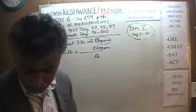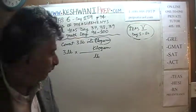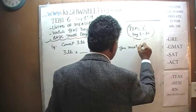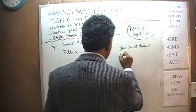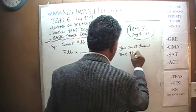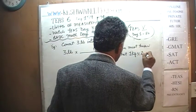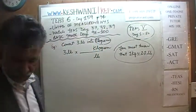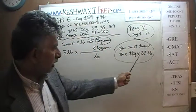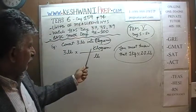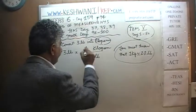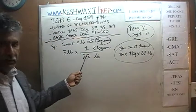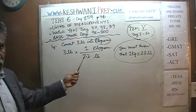You must memorize that one kilogram is approximately 2.2 pounds — this is something you have to know, otherwise you can't do this problem. These two quantities are one and the same. So if you put one kilogram on the top and 2.2 pounds on the bottom, these two are equal, and since they are equal, the fraction equals 1.